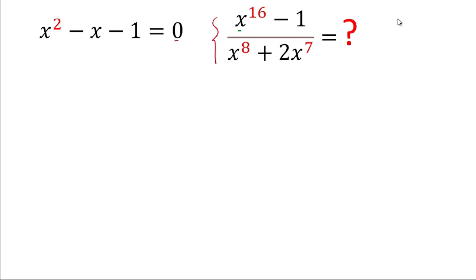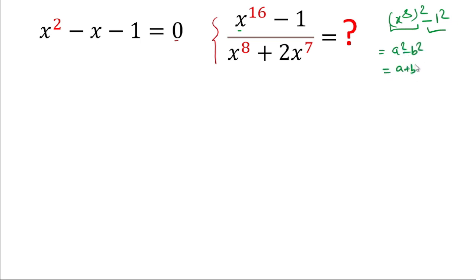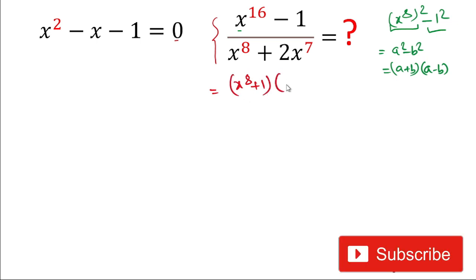Let's start. If you look at the numerator, it is in the form of x to the power 16, which we can write as (x⁸)² minus 1². This is in the form of a² minus b², so we can write it as (x⁸ + 1) times (x⁸ - 1).